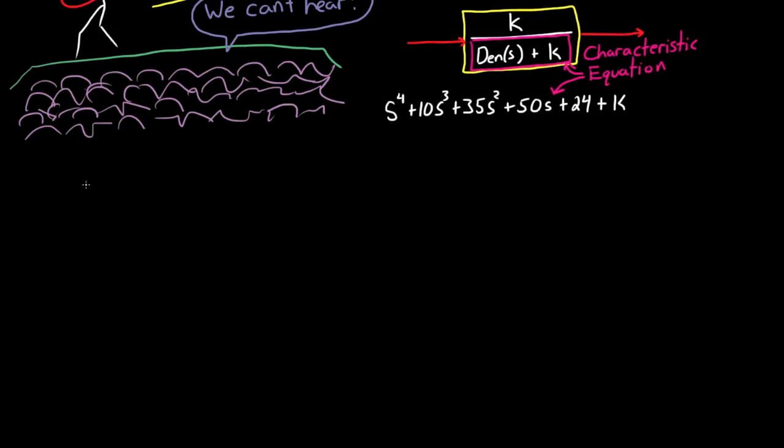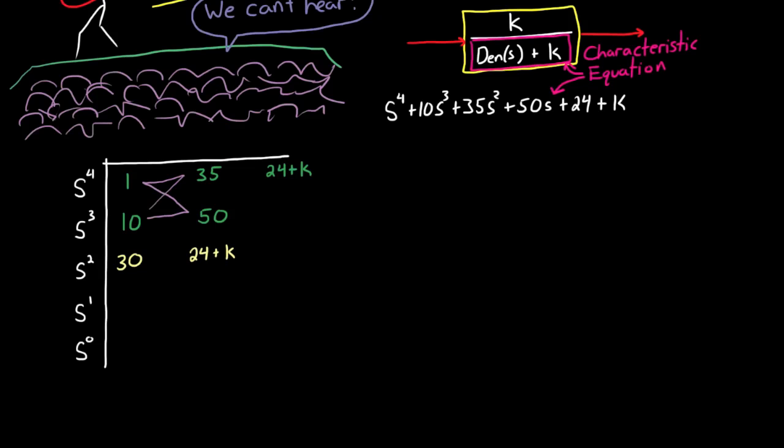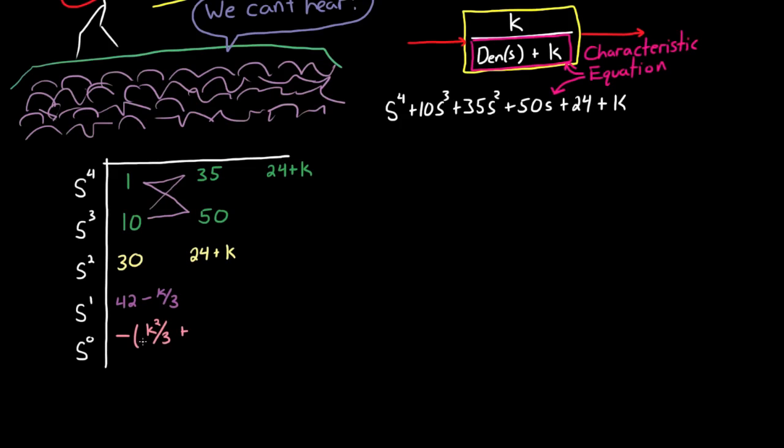And now we set up the Routh array, and we can use the coefficients in this polynomial to fill out the first two rows, just like we've done in all of the other problems. And then we can fill out the other rows using the figure 8 method. But notice that we're keeping k as a variable throughout this whole process. And if I'd actually worked this problem out before starting this video, maybe I would have noticed that this produces a rather ugly equation at the end here, and perhaps I could have simplified it. Unfortunately, this is what the problem produces, so we'll just run with it.